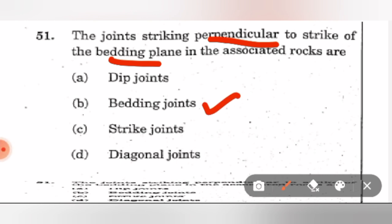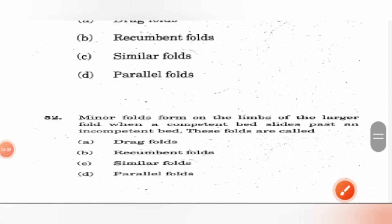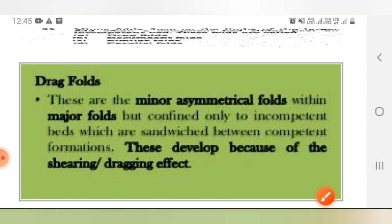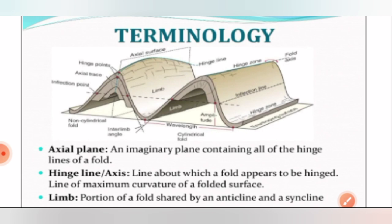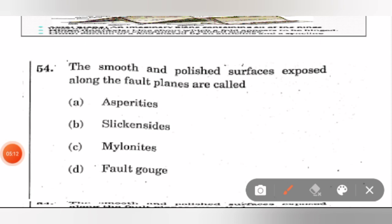This is the image for reference. Here these points on the limbs are called inflection points, and this distance is breadth. So aspect ratio is amplitude over breadth. The joints which are striking perpendicular to the strike of bedding plane - if it is parallel, then it is bedding joint; if parallel to strike, then strike joint; if diagonal to strike, then diagonal joint. They are saying it should be perpendicular to strike, so it will be dip joint. Minor folds form on the limbs of larger folds when a competent bed slides past an incompetent bed - these are called drag folds. These are minor asymmetrical folds within major folds but confined only to incompetent beds which are sandwiched between competent ones. These develop because of shearing as well as dragging effect. The line of maximum curvature in a folded bed is known as hinge line. This image is reference for the question. The smooth and polished surface exposed along the fold plane are called slicken sides.